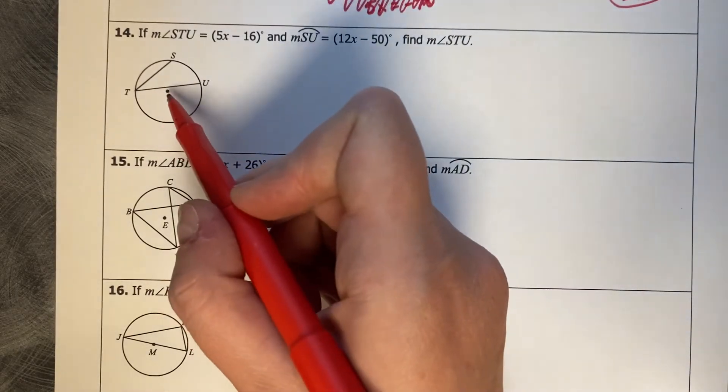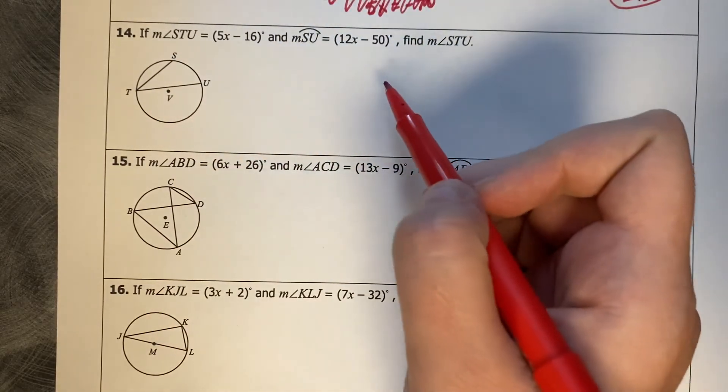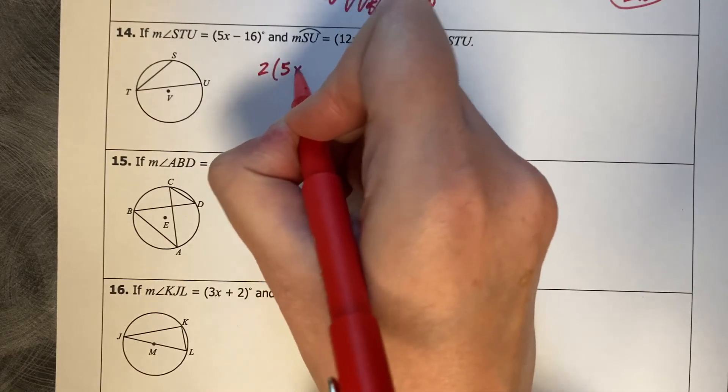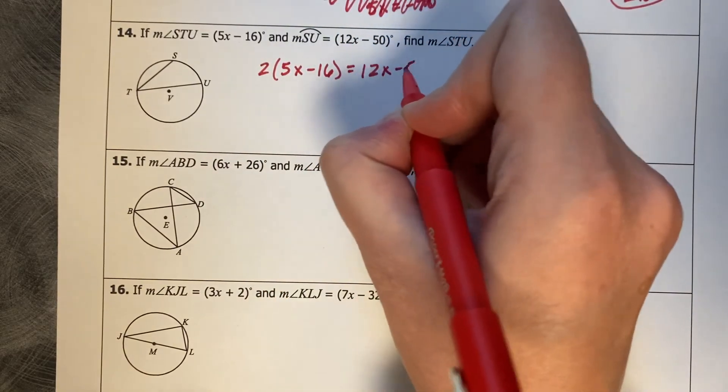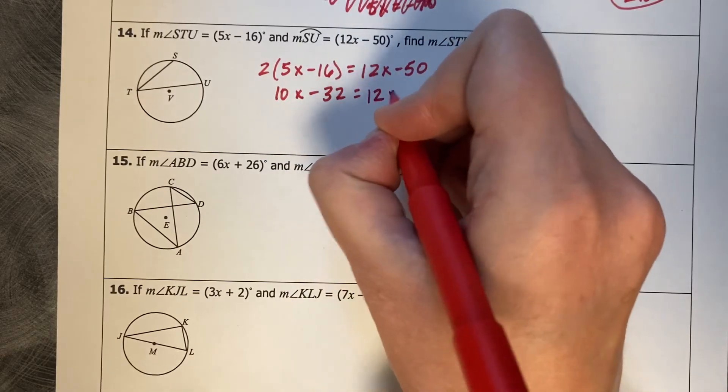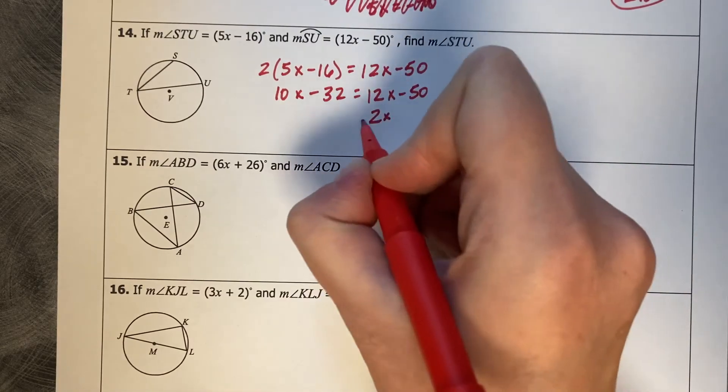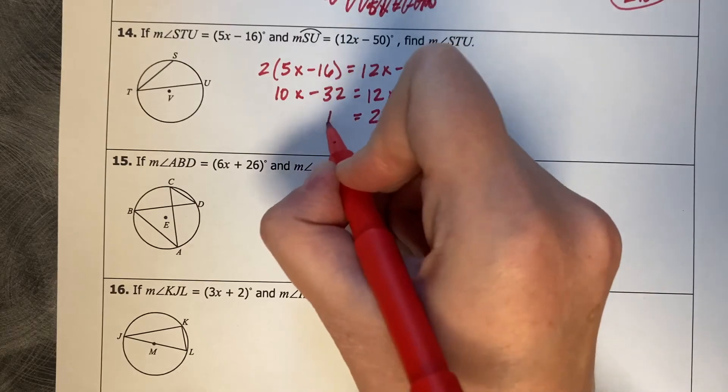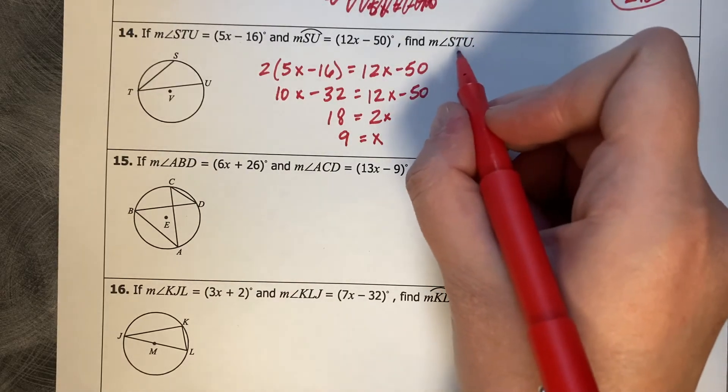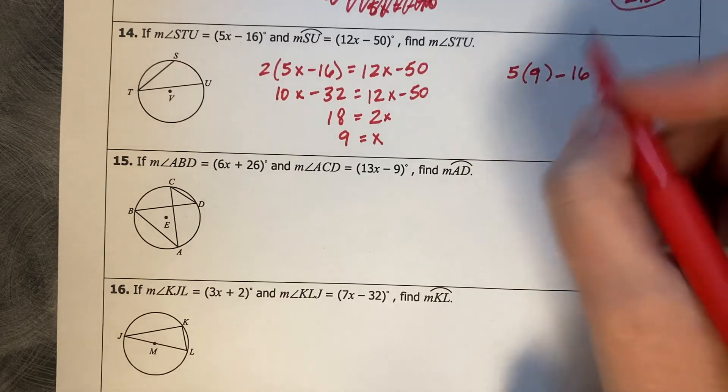All right. This one almost goes through the diameter, but not quite. So we know STU is 5X minus 16. SU is 12X minus 50. Similar process here. We want to double the smaller one and make it equal to the larger. So 2 times 5X minus 16 equals 12X minus 50. So then 10X minus 32 equals 12X minus 50. Then if we subtract 10, we get 2X. And then we add 50, that's going to be 18. So 2X equals 18, divide by 2, and X equals 9. And then it wants the angle measure STU. So we'll plug it back in to STU. So 5 times 9 minus 16, which is going to be 29 degrees.